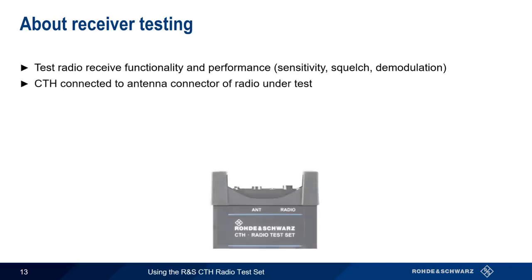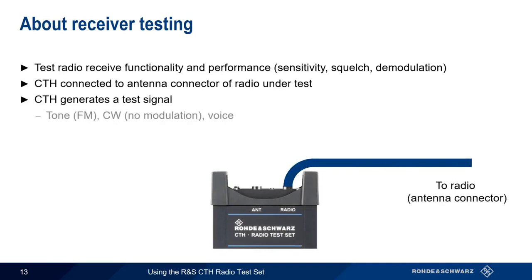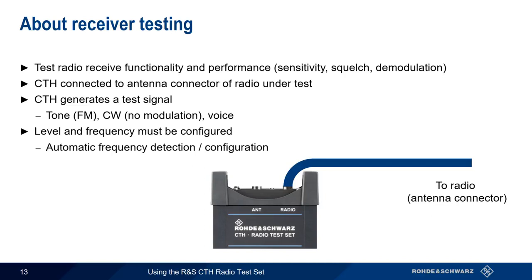The CTH is connected to the antenna connector of the radio under test and then generates a test signal. This signal can be a simple FM-modulated tone, an unmodulated or CW carrier, or a recorded voice message. The transmit power and frequency must be configured, although frequency can be automatically configured by the CTH based on the last received transmission.